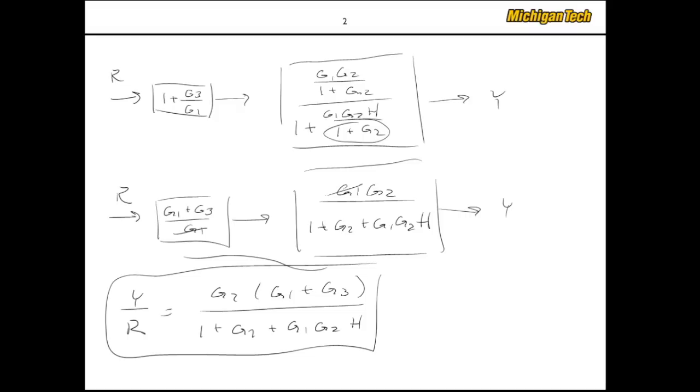So, I'm going to get G1 plus G3 over G1. And here, in our big block, if I multiply the top and bottom, the numerator and denominator, by 1 plus G2, I get a G1, G2, 1 plus G2, plus G1, G2, H. And knowing that these two blocks combine in series, I can see that this G1 cancels with that G1. So, finally, Y over R, I can just write down, is G2, G1 plus G3, over 1 plus G2, plus G1, G2, H. Bingo! I've got the closed loop transfer function.